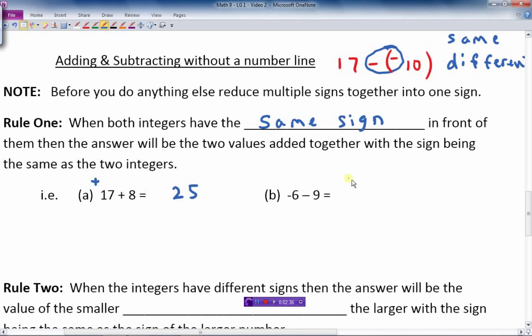Second example here, I've got negative 6 minus 9, both of those are negative, they have minuses in front of them. So because they have the same sign, we add them together, 6 plus 9 is 15, and the sign of the answer is the same as the signs of the numbers, so I put negative 15. So two negatives, a number minus another number, we just add them together to get a bigger negative number.